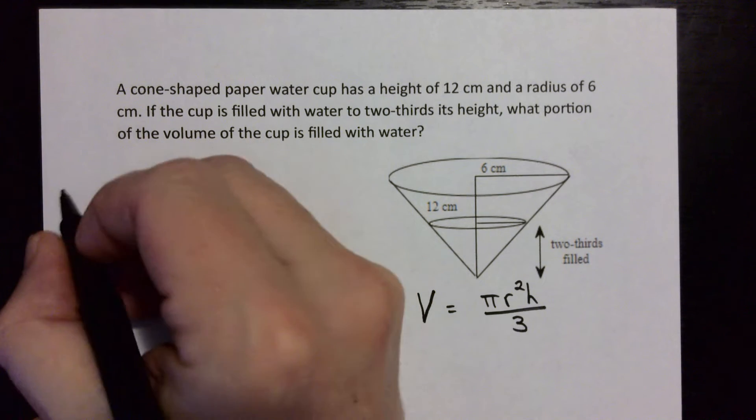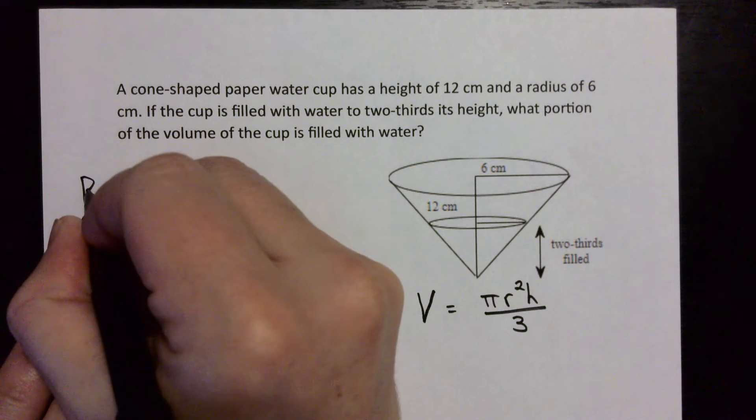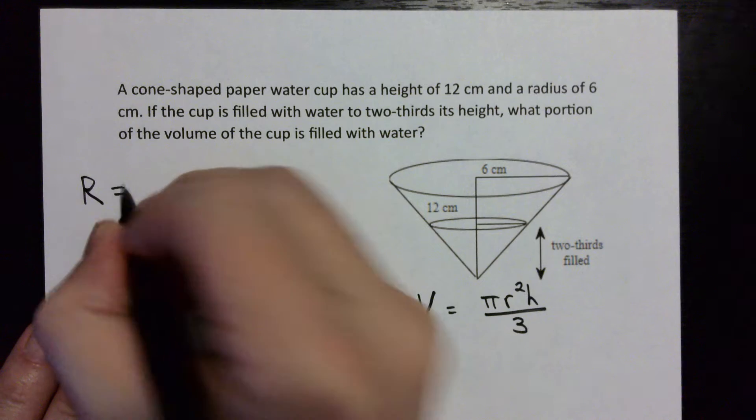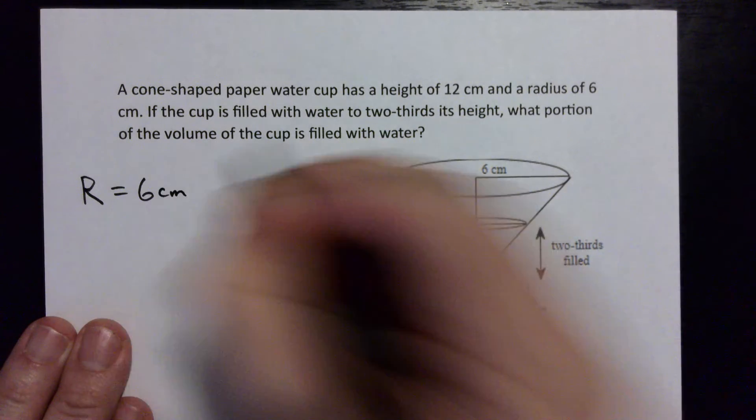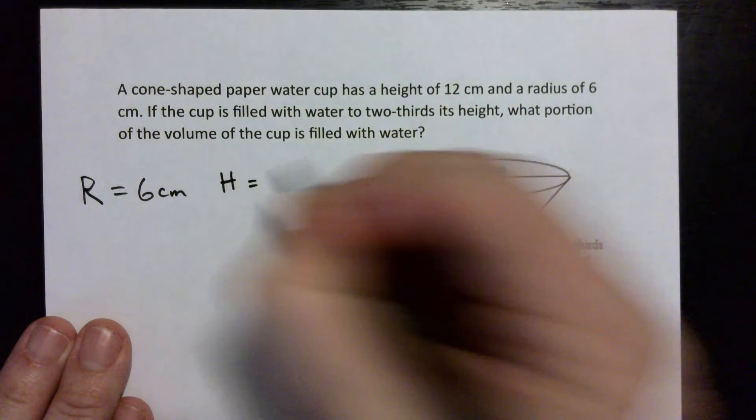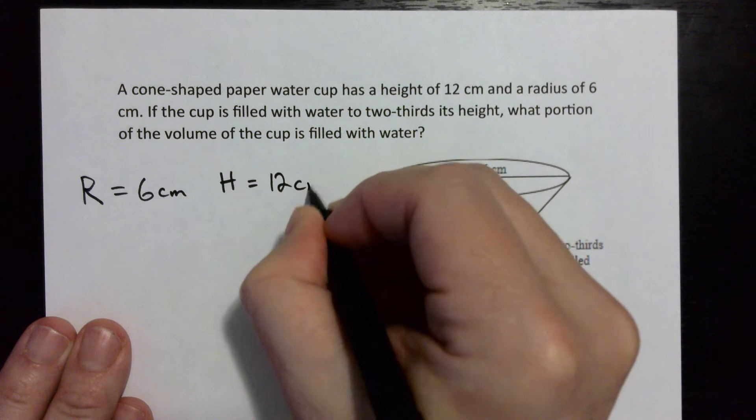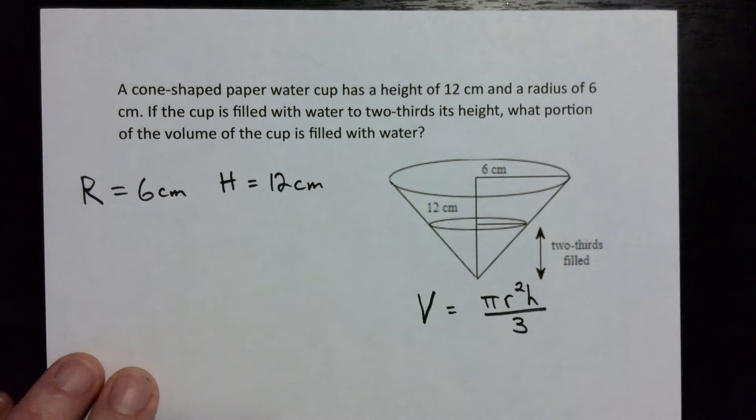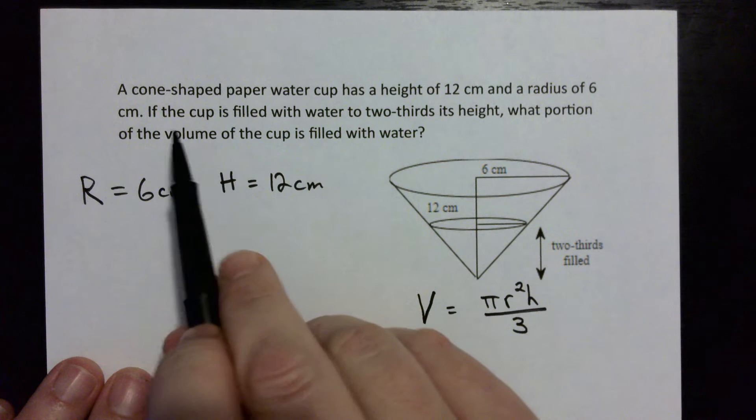So let's write down what information we have. We know that we have a radius in the cone, big R, of 6 centimeters. We know we have a height of 12 centimeters.